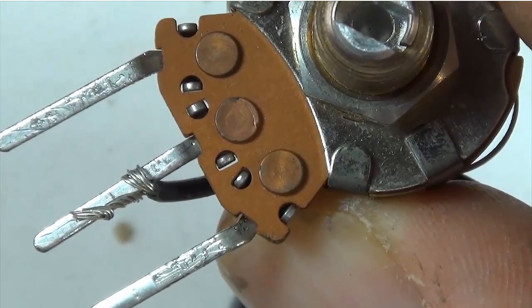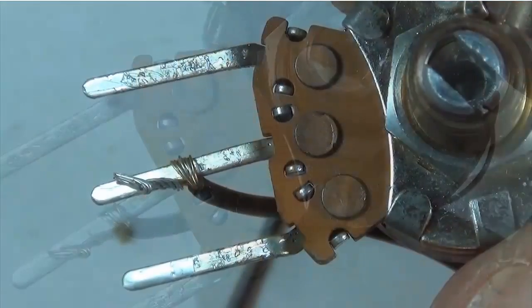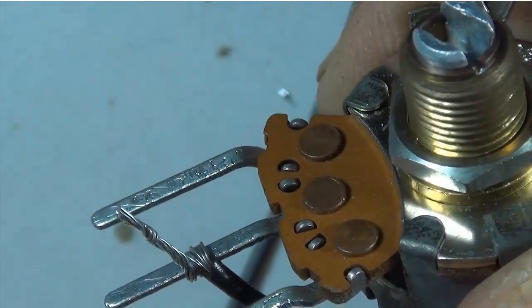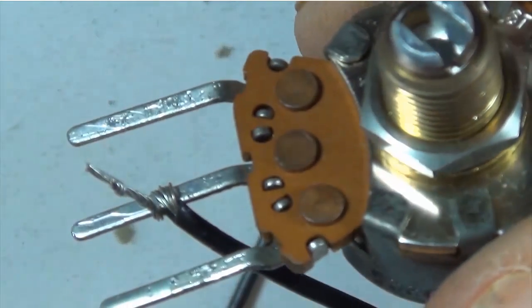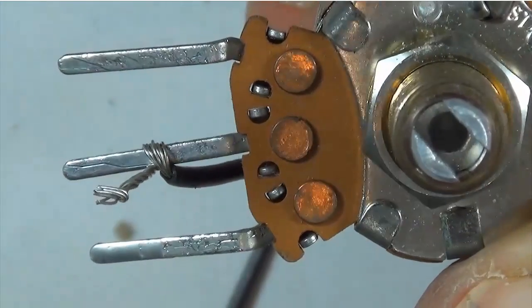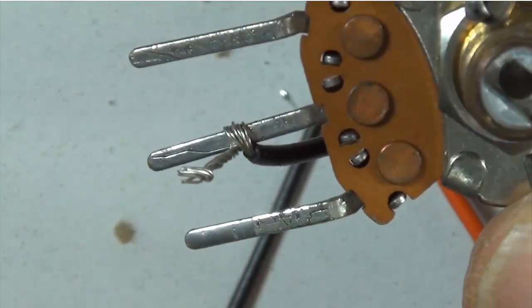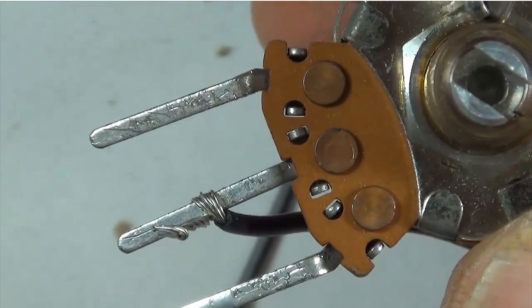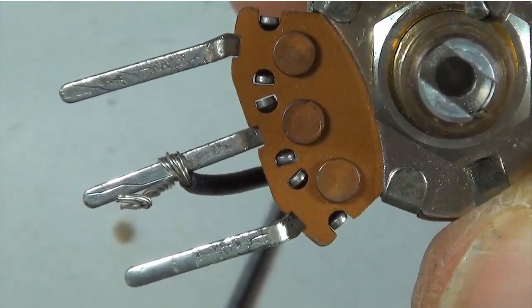Now this is ready to solder onto the spade connector. So I've only wrapped it around just one time. You don't need to keep on wrapping it like you're trying to rope a steer at a rodeo competition - not necessary.